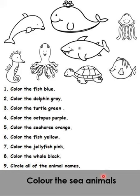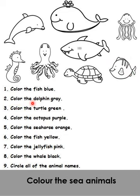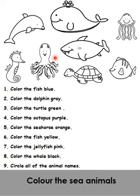Maksudnya, cikgu nak awak warnakan haiwan kat atas ni mengikut warna yang cikgu pilih. Contohnya, number one: color the fish blue - this fish is color blue. Number two: color the dolphin grey. Number three: color the turtle green. Color the octopus purple. Begitulah dengan warna-warna haiwan yang lain.